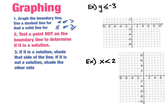Let's apply this to two examples. The first is Y is less than or equal to negative 3. We know Y equals negative 3 is a zero-slope horizontal line, and since it's less than or equal to, we use a solid line at Y equals negative 3. In the other example, X is less than 2 — I graph the vertical line X equals 2, but use a dashed line because it's strictly less than 2, so this line is not included in the solution.